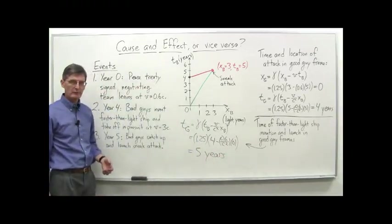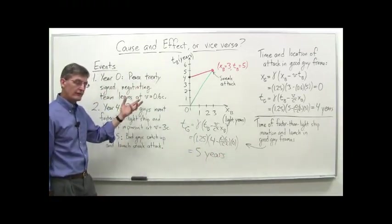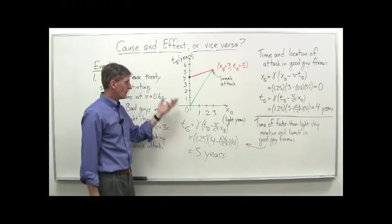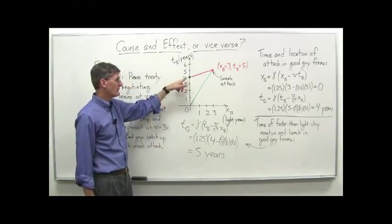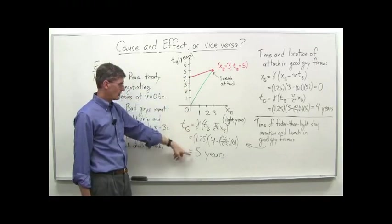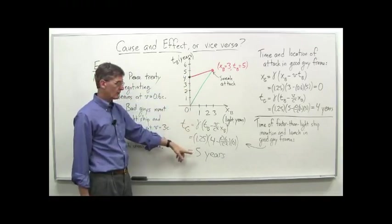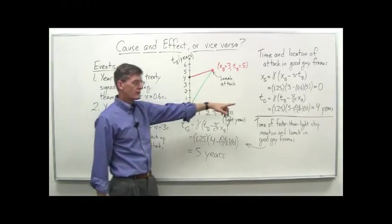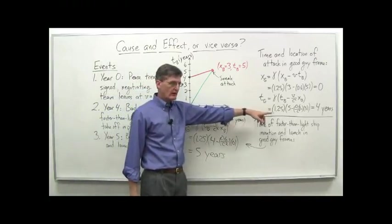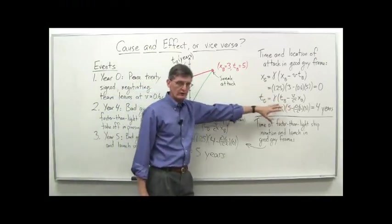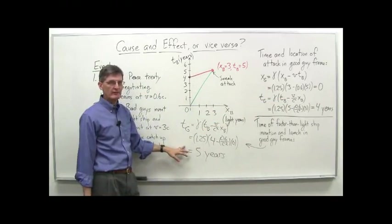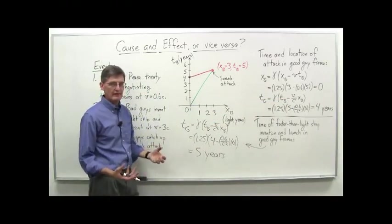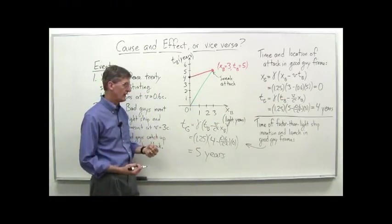So look what we've got here. In the good guy frame, the launch, the invention and launch of the spaceship occurs at 5 years, according to their clocks. And the sneak attack occurs at 4 years. In other words, the sneak attack occurred, in their frame, before the ship was even invented. So how can you have that? I mean, in other words, it reverses cause and effect.